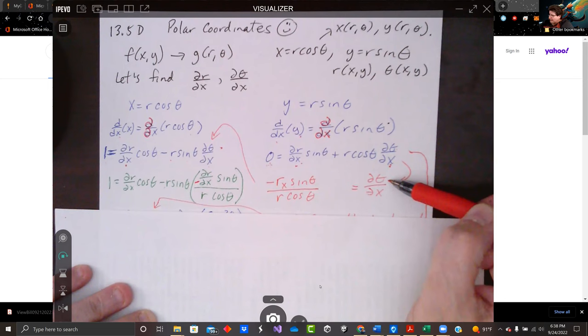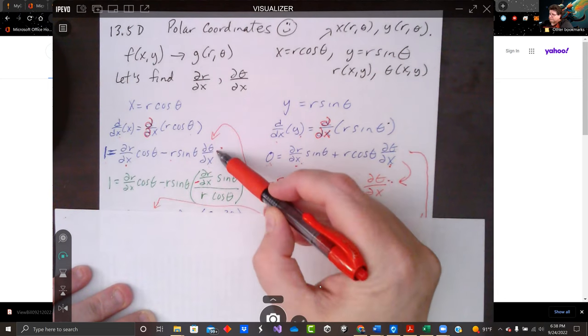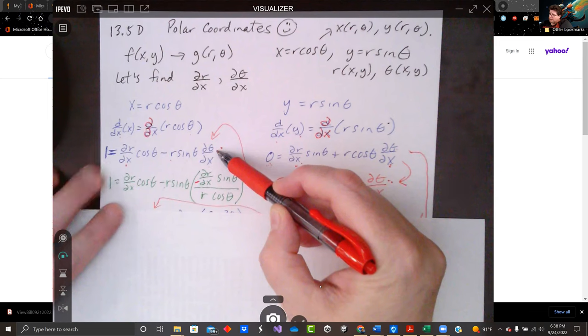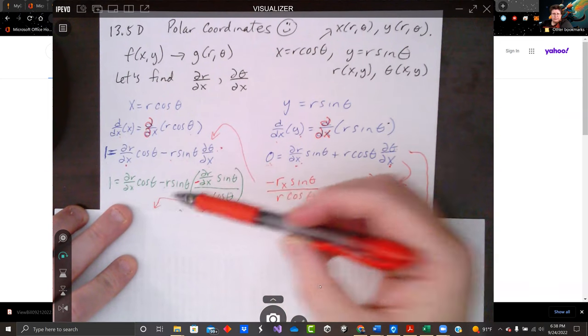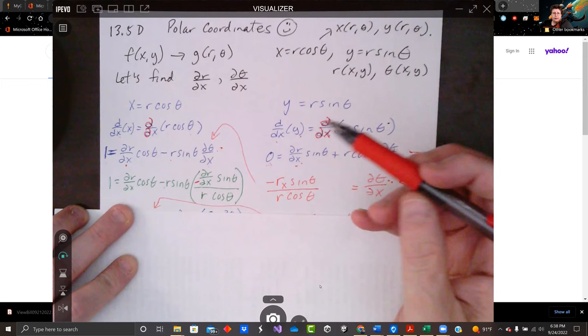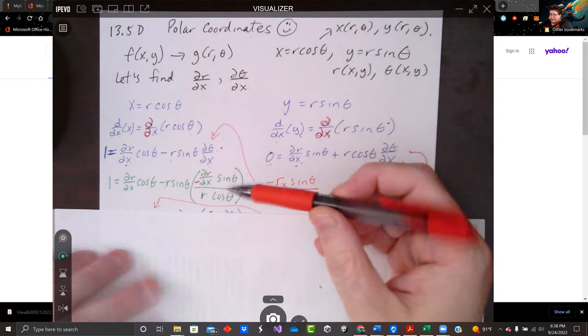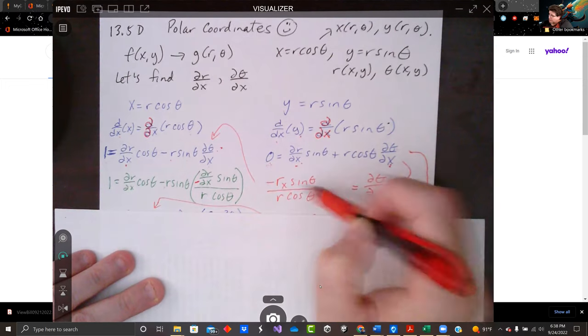I am going to take that and I'm going to plug that bad boy in right here. Okay. So I've got one equals dr/dx cosine theta minus r sine theta. And then everything just plugged in right there.